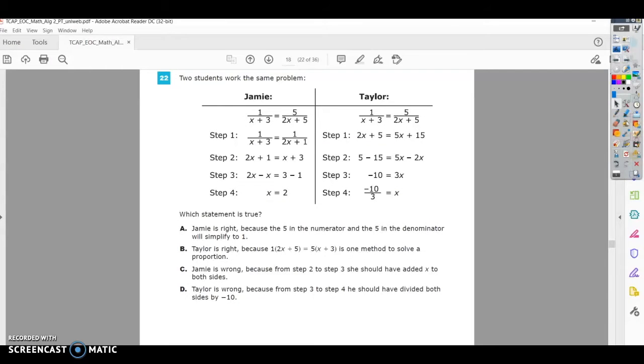This is number 22 on the Algebra 2 practice test. It says two students work the same problem - Jamie and Taylor.